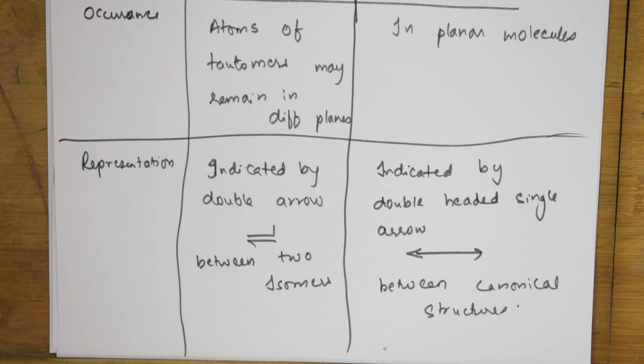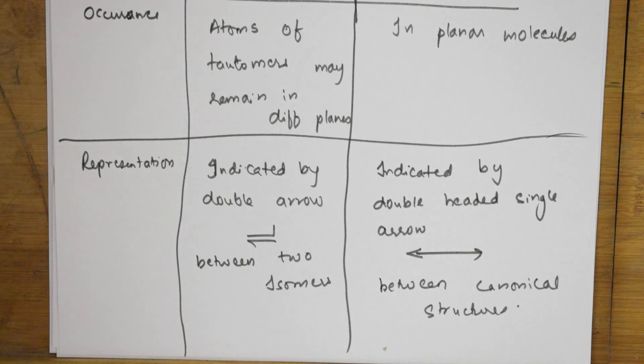So these are the differences between tautomerism and resonance. Thank you for watching — I will meet you again in the next video, which will cover the very important topic of reaction intermediates.